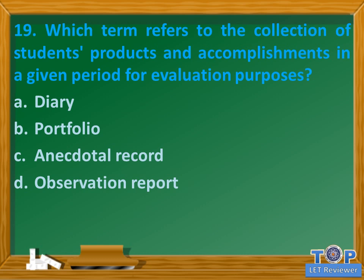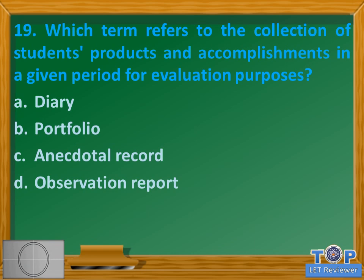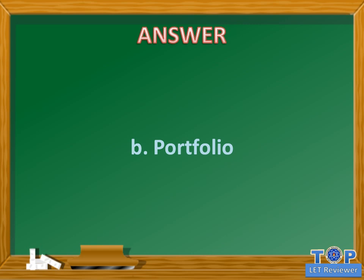Question number nineteen: Which term refers to the collection of students' products and accomplishments in a given period for evaluation purposes? A. Diary, B. Portfolio, C. Anecdotal record, D. Observation report. Answer: B. Portfolio.